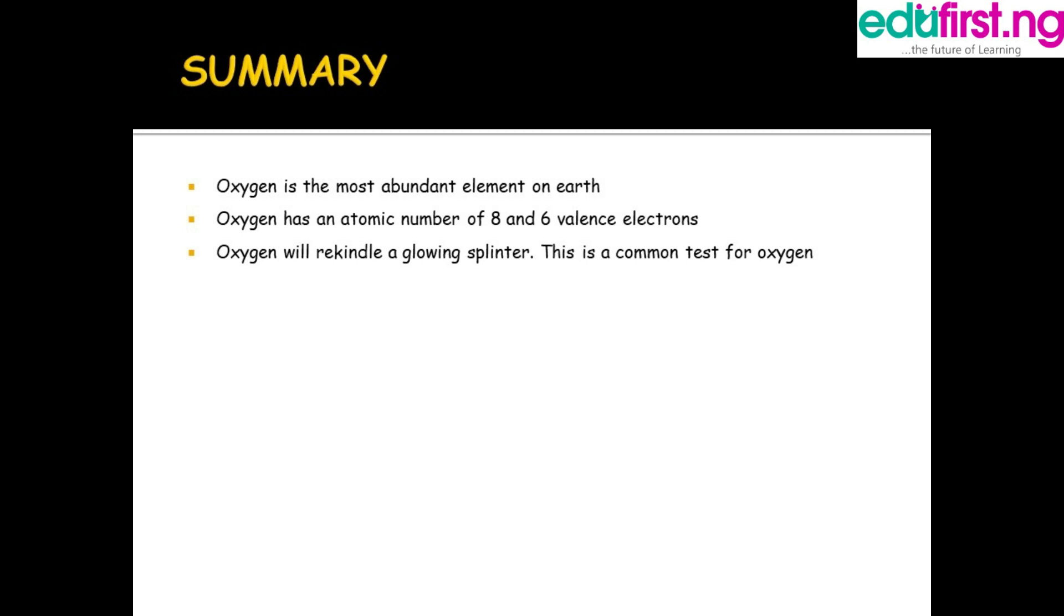Let's come to the end of this class. Let's move to summary. Oxygen is the most abundant element on earth. Oxygen has an atomic number of eight and six valence electrons. Oxygen will rekindle a glowing splinter—this is also a common test for oxygen.